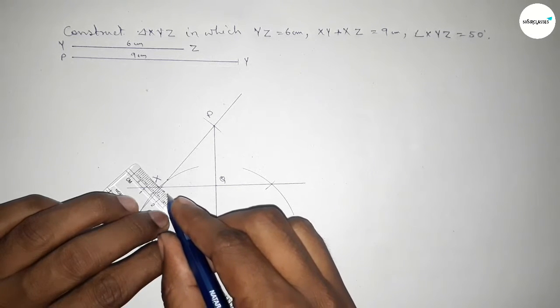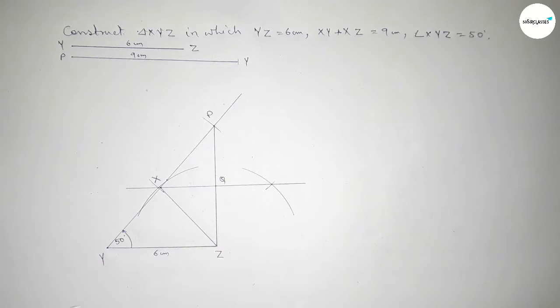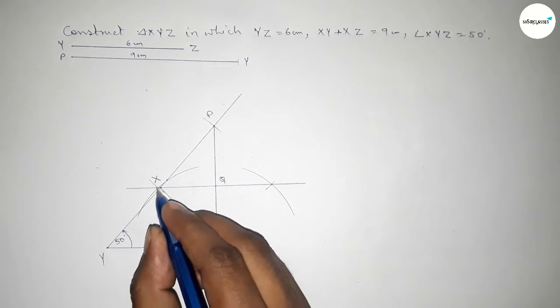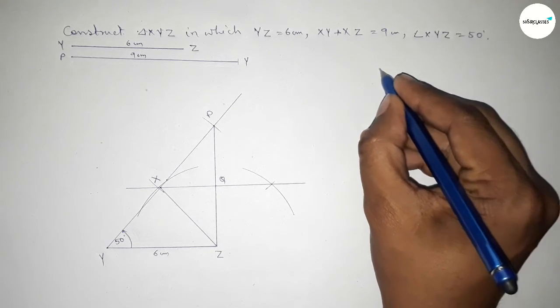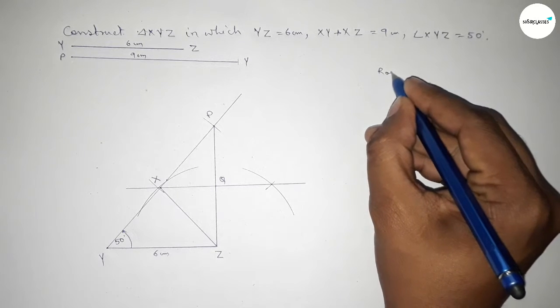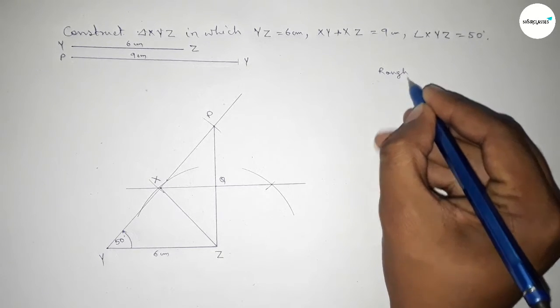Both lines intersect the line PY at a point X and at a point Q. Now joining X and Z. So XYZ is the required triangle. Now roughly discussing some calculation here.